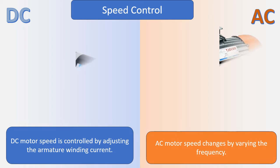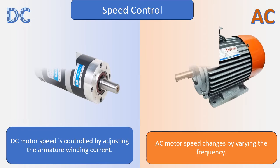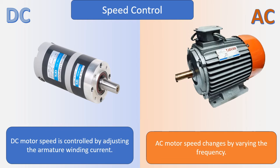Speed control: AC motor speed changes by varying the frequency, while DC motor speed is controlled by adjusting the armature winding current.